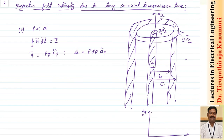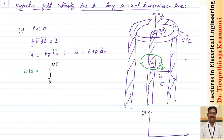The Amperian loop should be chosen so that H has constant magnitude at every point on it. The differential length is ρ dφ in the A_φ direction, where ρ depends on your location. For the left-hand side, the integral from 0 to 2π of ρ H_φ dφ gives 2π ρ H_φ.